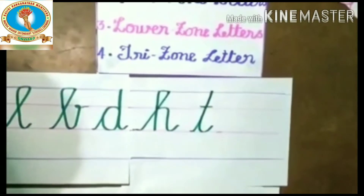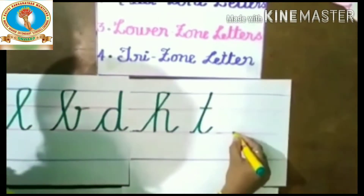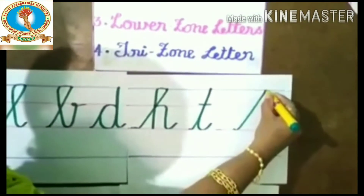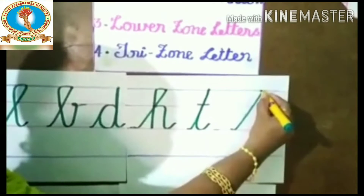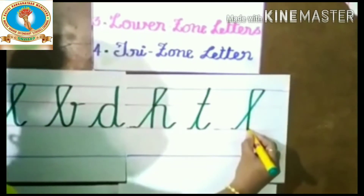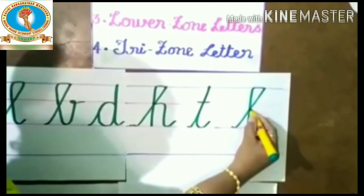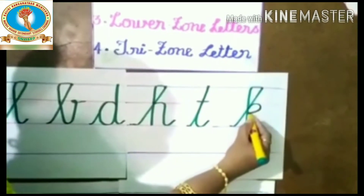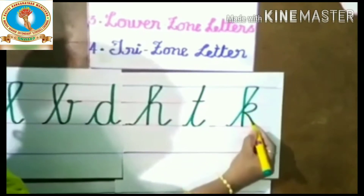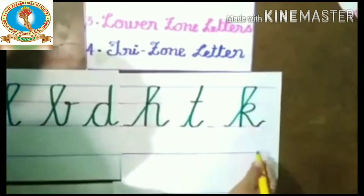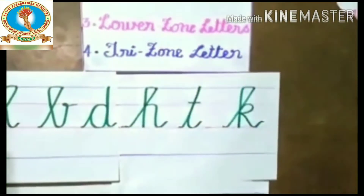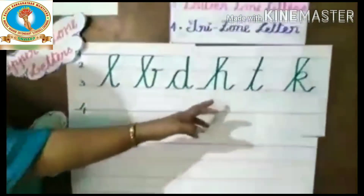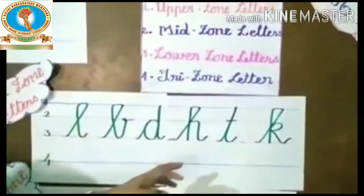Then K. Put the slanting line to the first line, then a straight line, a small semicircular, then small curve. K. These are the upper zone letters: L, B, D, H, T, K.